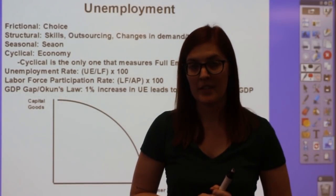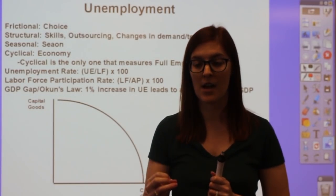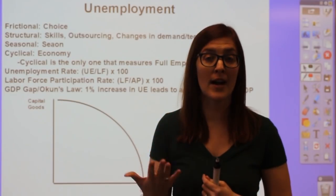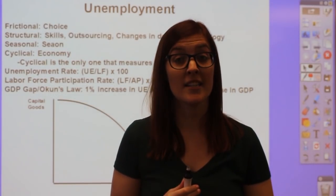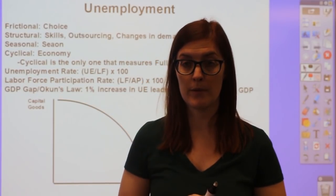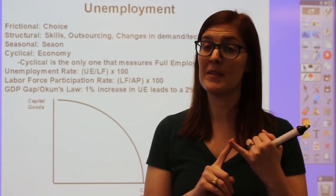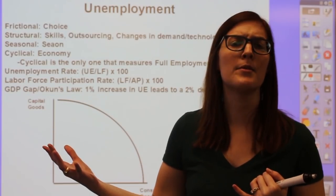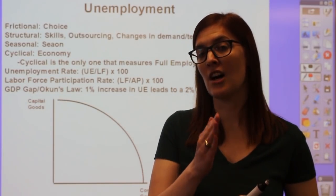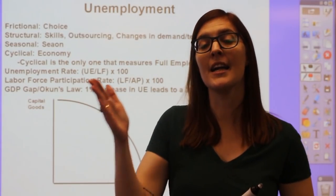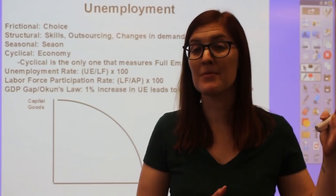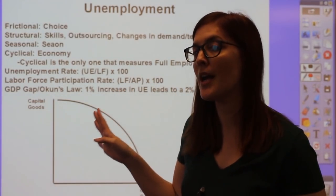The final Unit 2 topic is unemployment. You only count as unemployed in America if you are collecting unemployment compensation—actively applying for jobs. Discouraged workers who never found a job after college don't count. There are four types: frictional (keyword: choice—leaving a job to find a better one or being choosy after a layoff), structural (keyword: skills—outsourcing, technology changes, or demand shifts eliminate your job), seasonal (your job ends with the season), and cyclical.